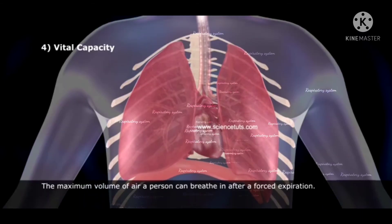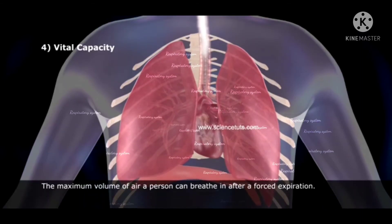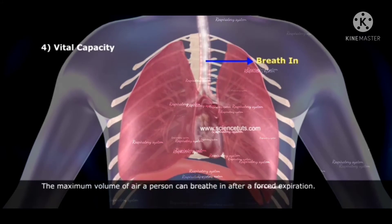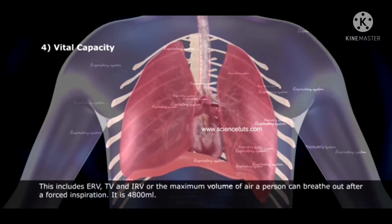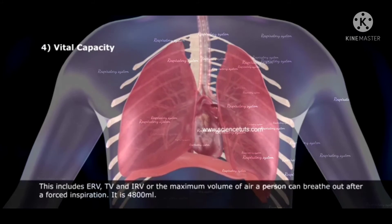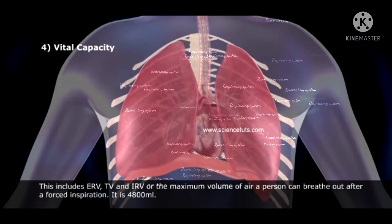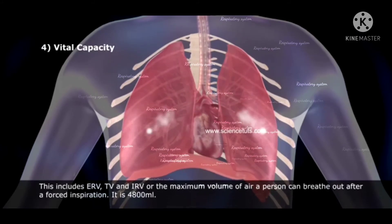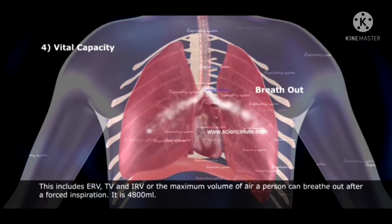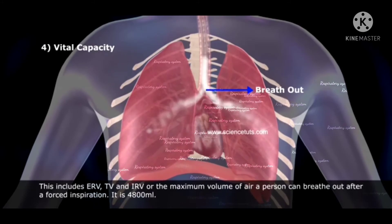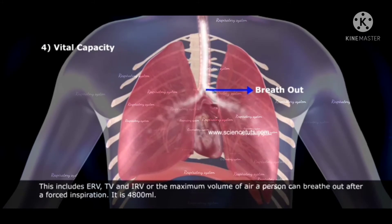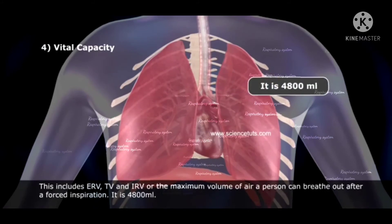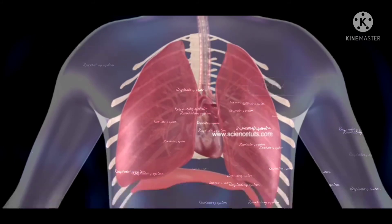Next is vital capacity — the maximum volume of air a person can breathe in after a forced expiration, or the maximum volume a person can breathe out after a forced inspiration. This includes ERV, TV, and IRV, and equals 4,800 ml.